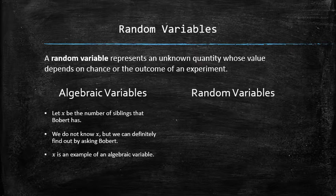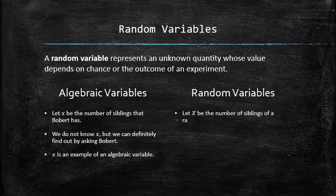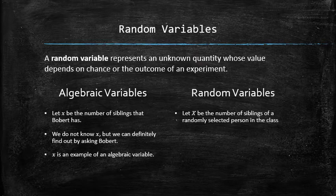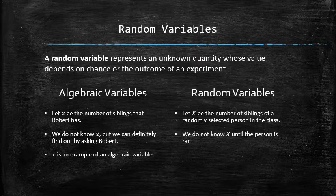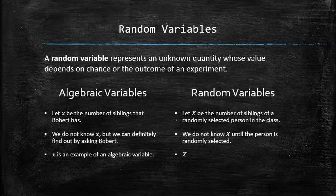On the other hand, in statistics, a random variable is an unknown quantity whose value depends on chance or the outcome of some experiment. For example, let x be the number of siblings of a randomly selected person in the class. We do not know x until the person is randomly selected. So here the experiment is selecting a person. Therefore, x is an example of a random variable.